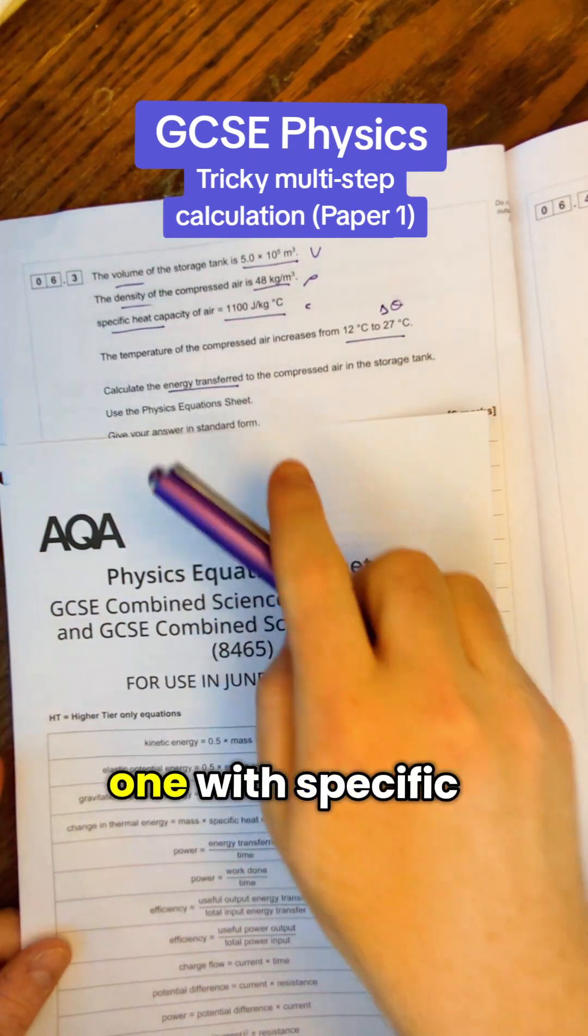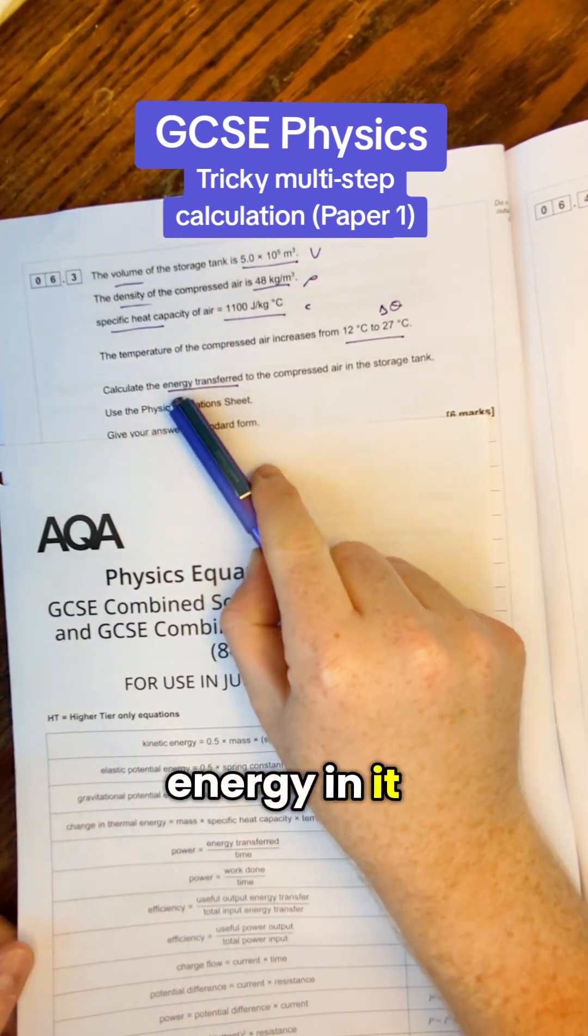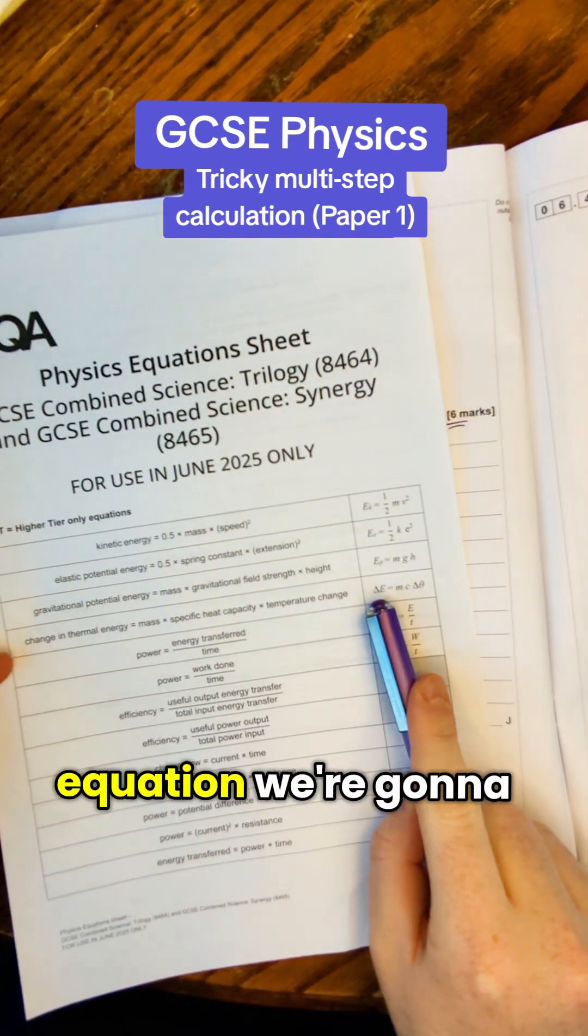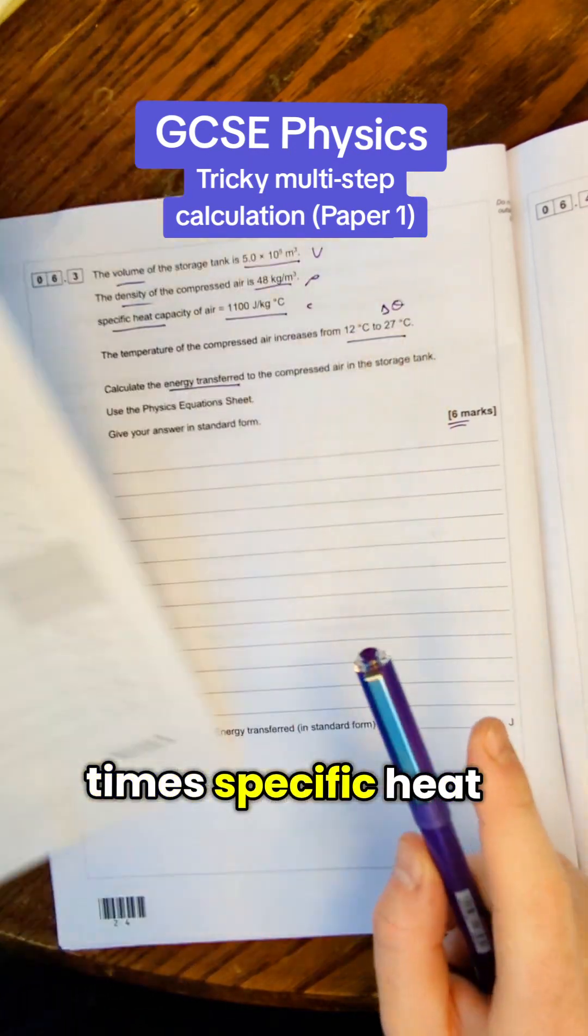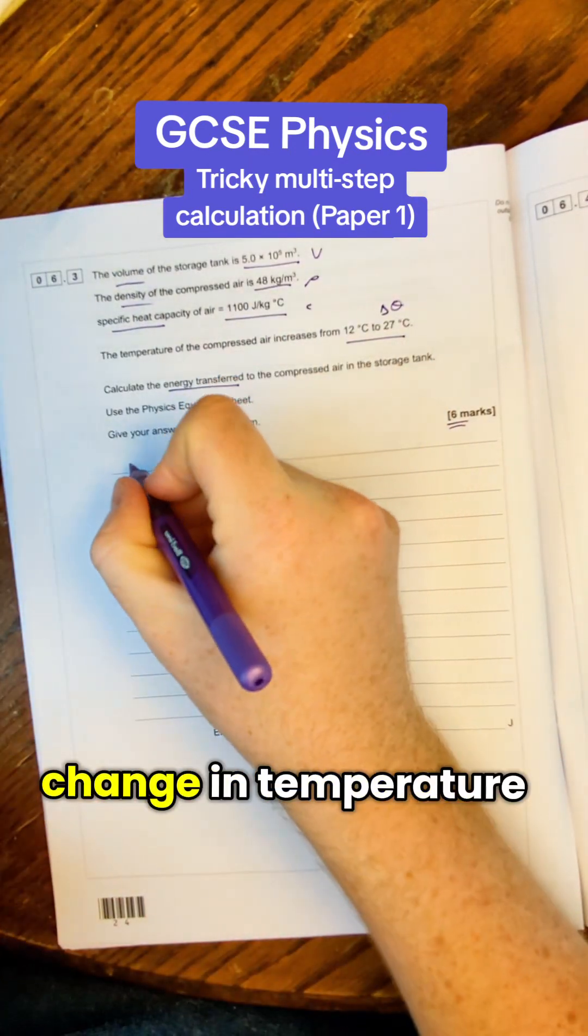This is our first one to use, one with specific heat capacity and energy in it because that's what we're trying to find. For that equation we're going to use this one here. Energy equals mass times specific heat capacity times change in temperature.